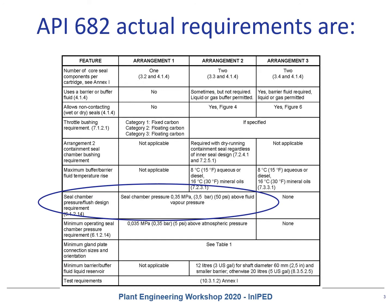The API 682, the global standard for mechanical seals, defines light hydrocarbons as a hydrocarbon liquid which will readily boil at ambient conditions. API 682 applies different rules, like the 30% vapor pressure margin, or the 20 Kelvin rule, or the actual requirement of 3.5 bar — which means 50 psi — seal chamber pressure above the fluid vapor pressure.